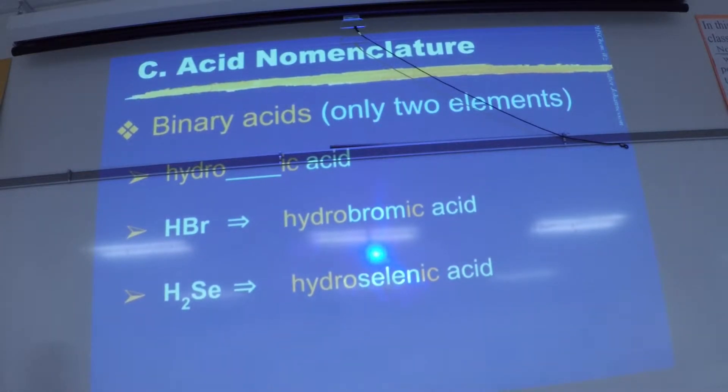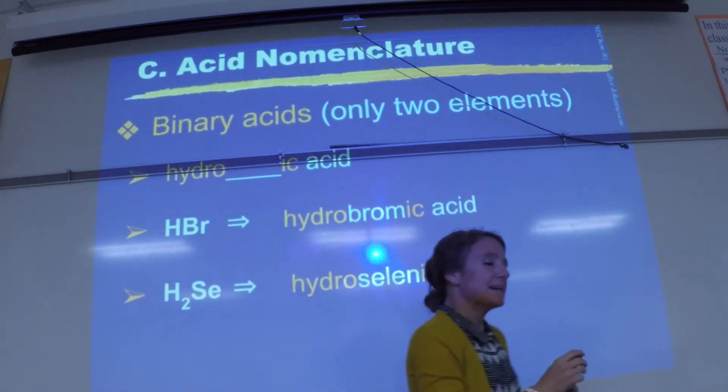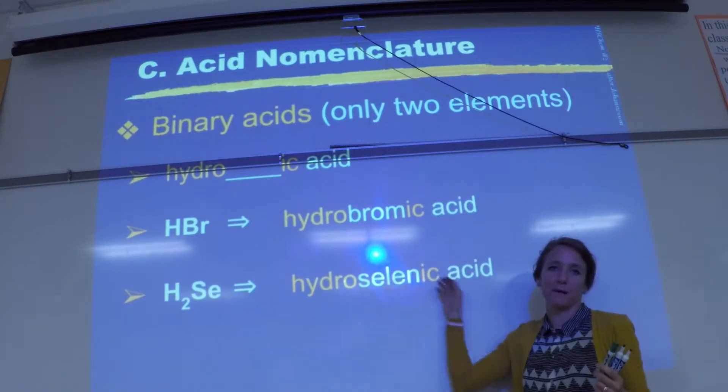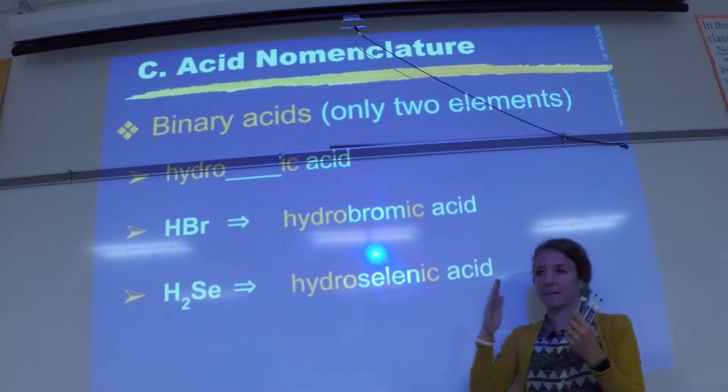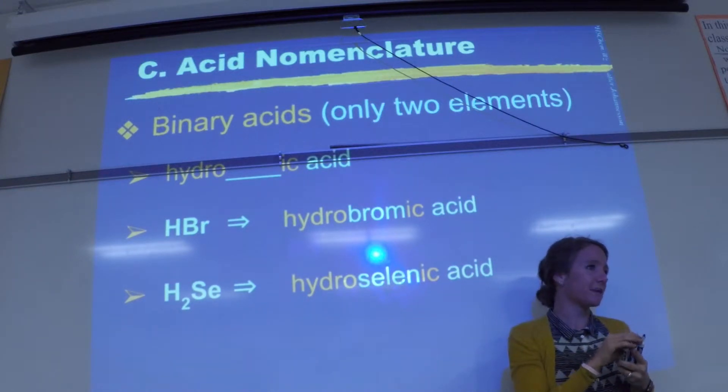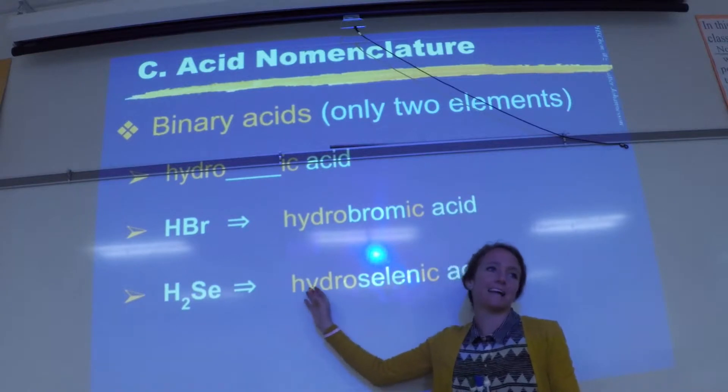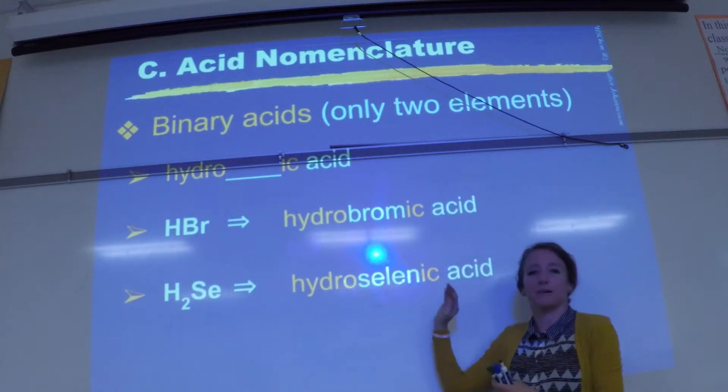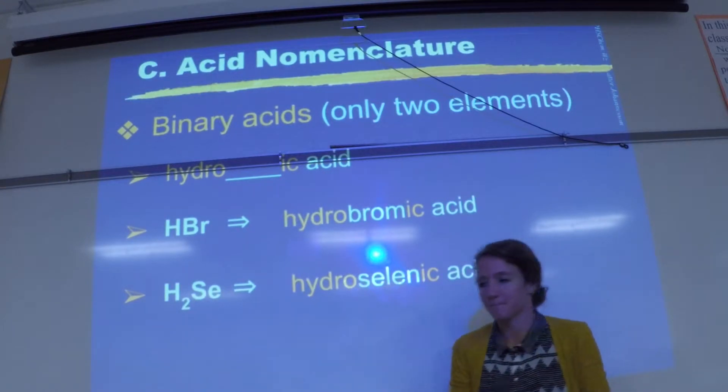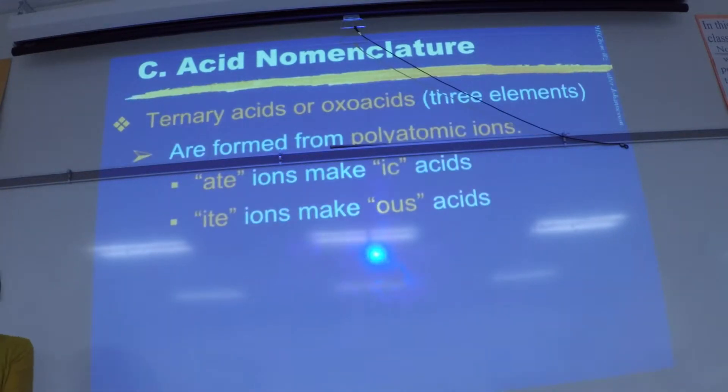And that's it for binary: hydro in front, change the ending to ic, add the word acid. Now just like with the covalent things that Jacob brought up in the warm-up, there are some times where it's not as clear how to drop and add, right? Sometimes it's tricky to know how to add that ending. If your spelling in the middle is a little messed up, but you have hydro in the front, I can tell what element is in the middle and you put ic at the end, I'll forgive you for weird spelling things.